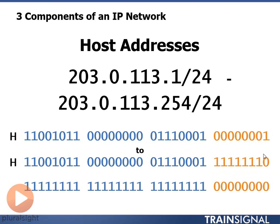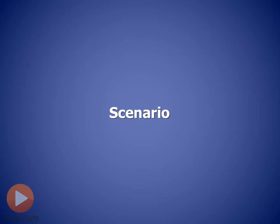The first host on a network that we can assign to a device is one more than the network address, and the very last host we can assign to a device is one fewer than the broadcast address. So those are the three components of an IP network.